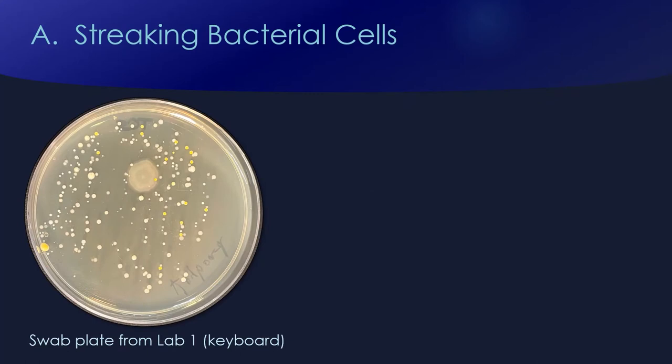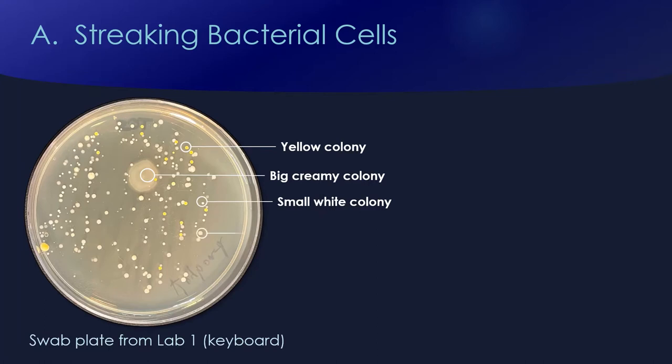In Lab 1 we did an environmental survey where I went around and swabbed a few different surfaces around the college. If you take a look at this particular plate, this was the keyboard that I swabbed and it has at least four different species of bacteria on it — there are these little yellow ones, this big creamy colony, some little tiny white colonies, and these opaque creamy colonies.